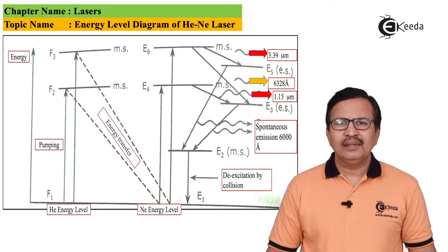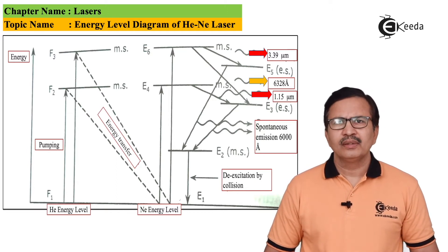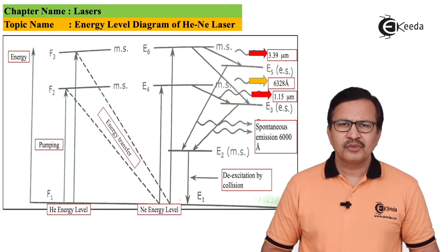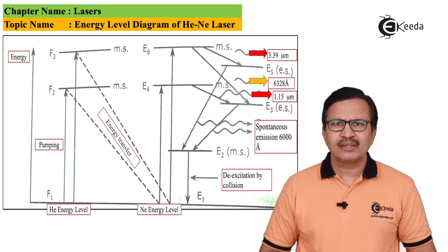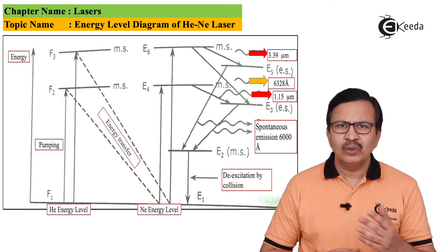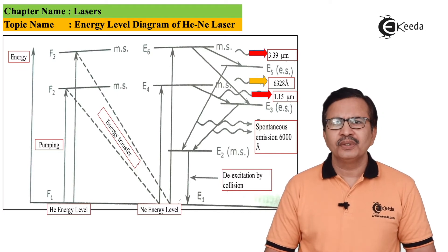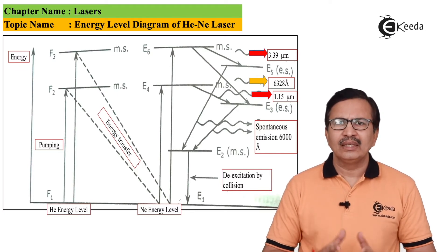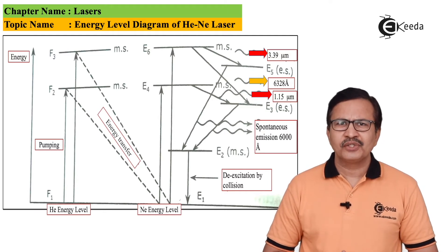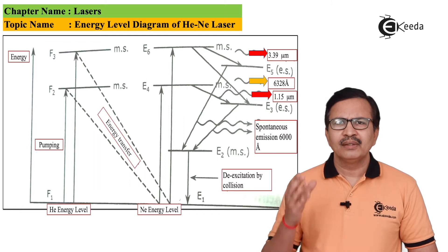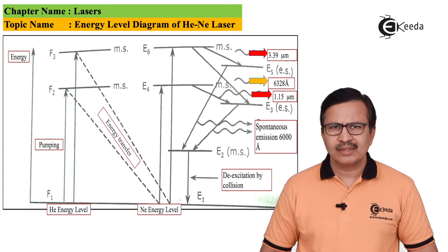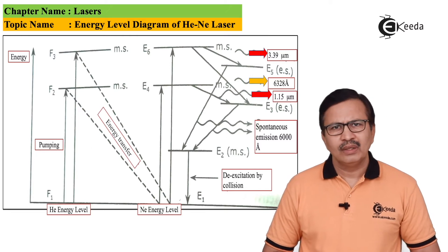When electrical pumping is switched on in the lasing material, helium atoms are excited to higher energy levels because of collisions between electrons and helium atoms. The energy gained from such collisions raises the helium atoms to the excited metastable states F2 and F3.